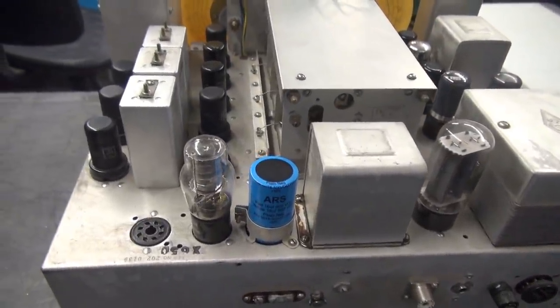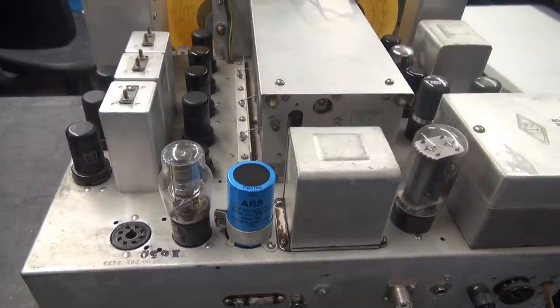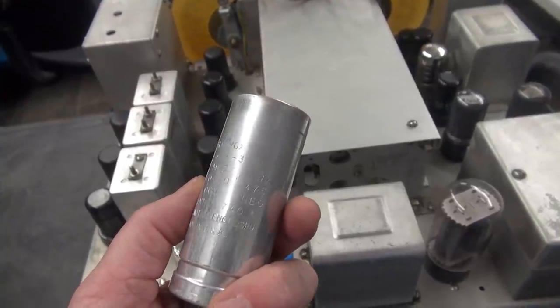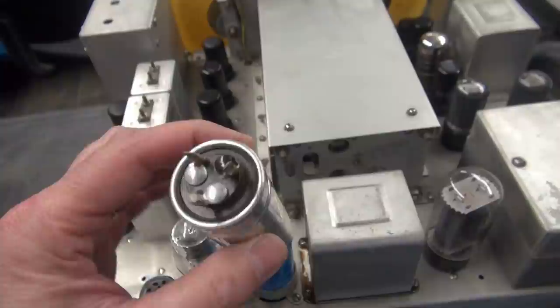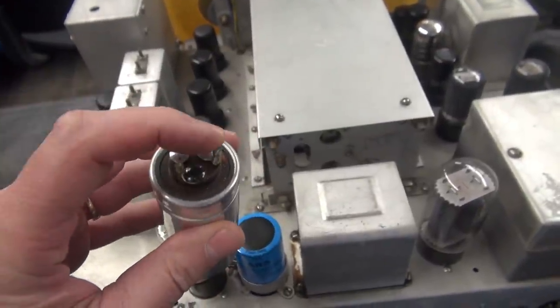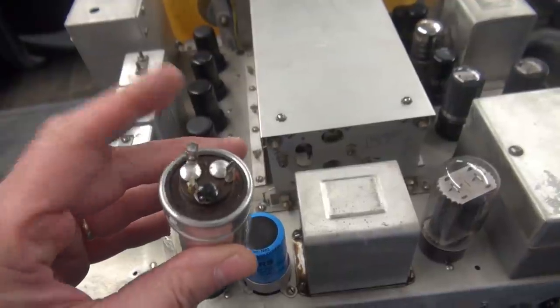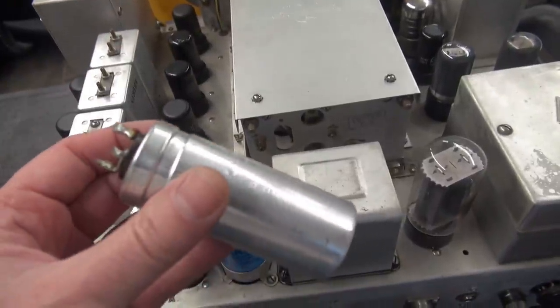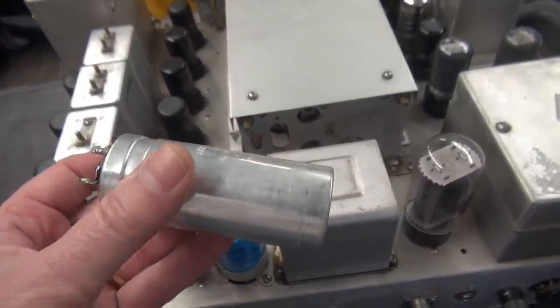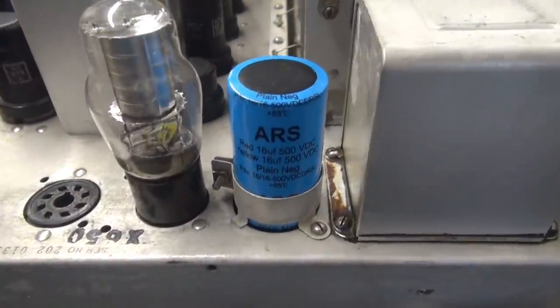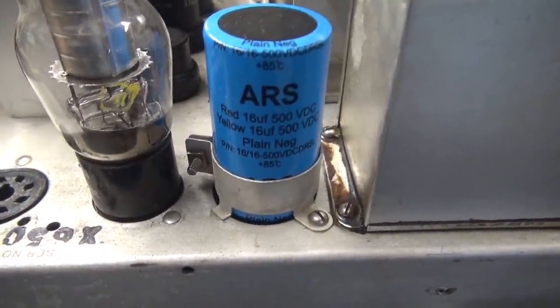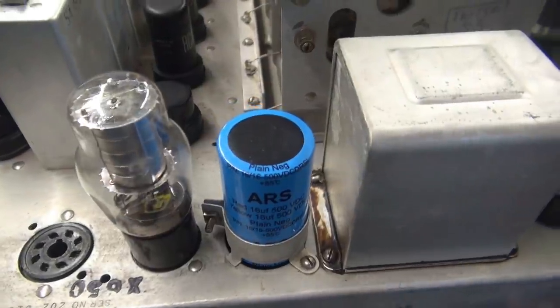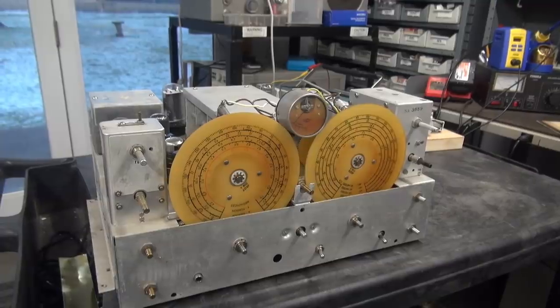This was the cap I removed - a dual 10 microfarad cap at 475 volts. If you look at the base you see you've got your two positives and the negative, and the negative floats, it is not connected to the can. Don't put a standard can filter cap on this or you're going to damage the radio. Here is the replacement made by ARS - it's a dual 16 microfarad 500 volt. It goes right in place of the original, you just swing the wires on and you're off and running.